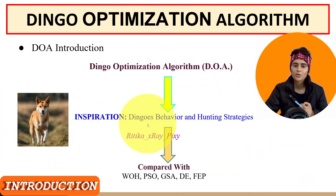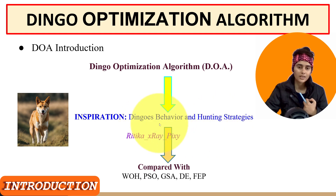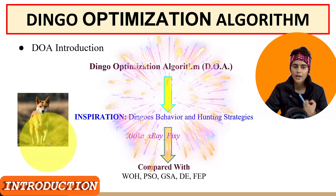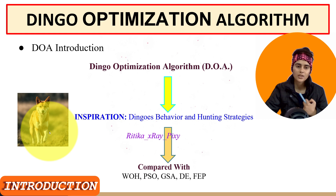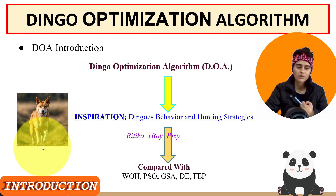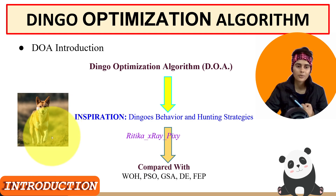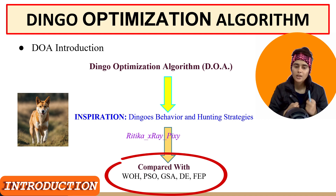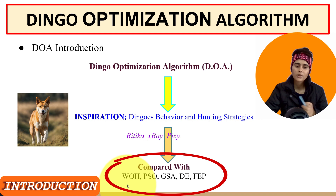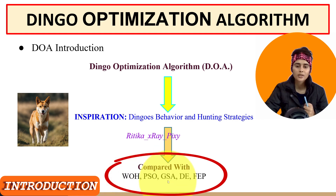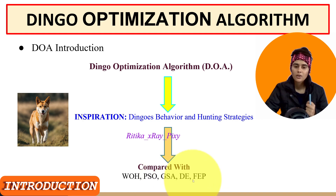This algorithm is inspired by the dingo's social behavior and different hunting strategies they use for survival in real life. The dingo is Australia's wild dog. This algorithm's performance is also compared with five well-known algorithms: Whale Optimization Algorithm, Particle Swarm Optimization, Gravity Search Algorithm, Differential Evolution, and Fast Evolution Programming.